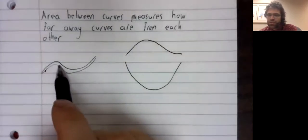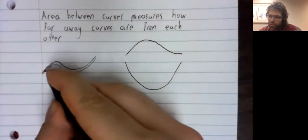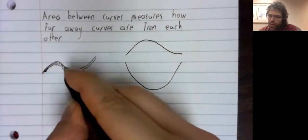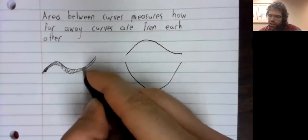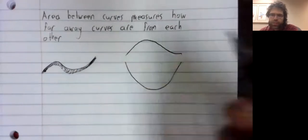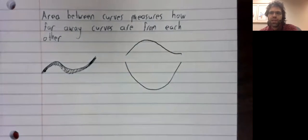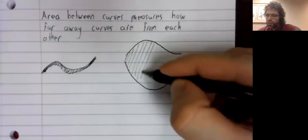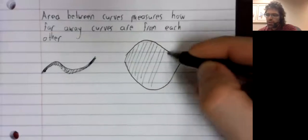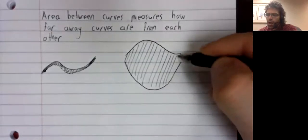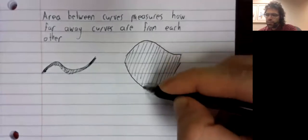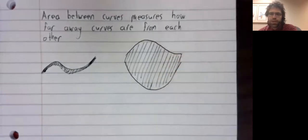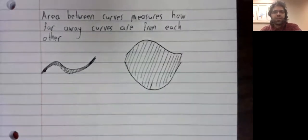These curves that are close together will have a relatively small area between them. Whereas these curves that are far apart have a relatively large area between them.